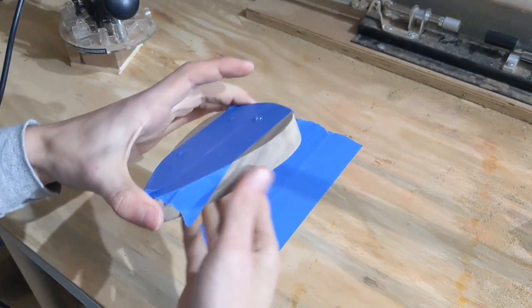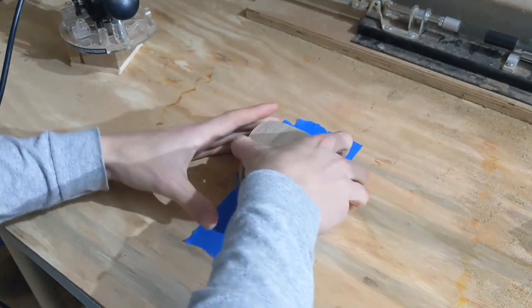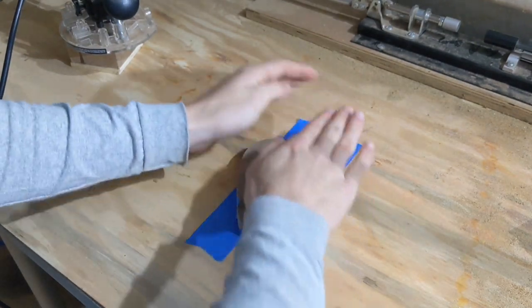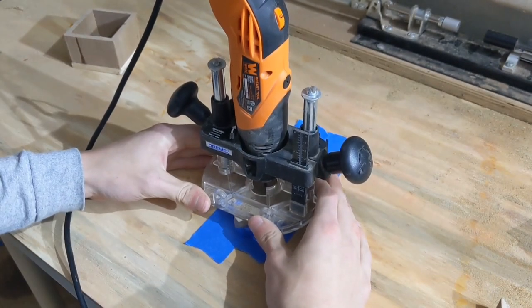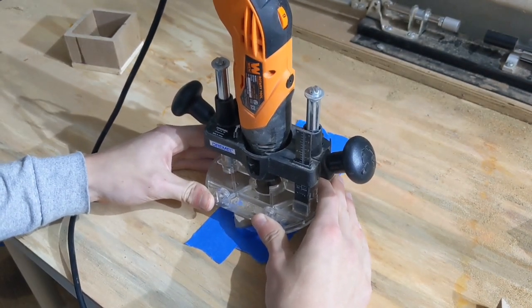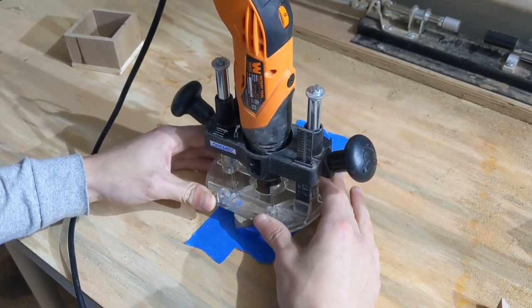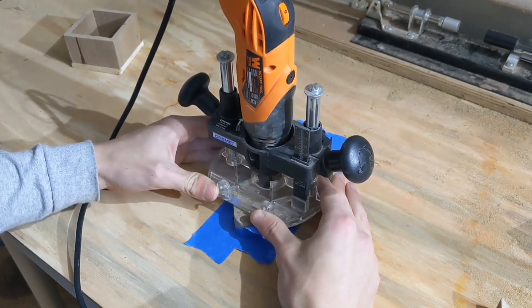Here I am attaching the guitar pick to the workbench with blue tape and some super glue. I would have preferred to use double-sided tape just because I find double-sided tape to be a very enjoyable thing, but I didn't have any available to me at this time.